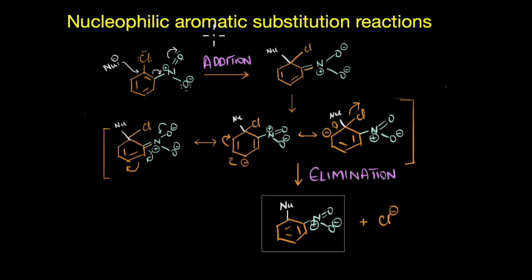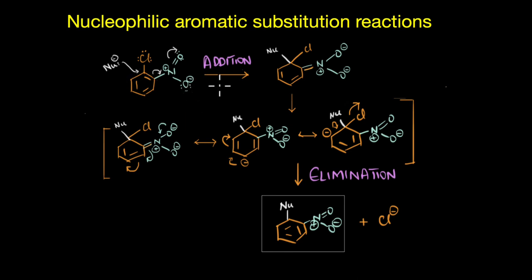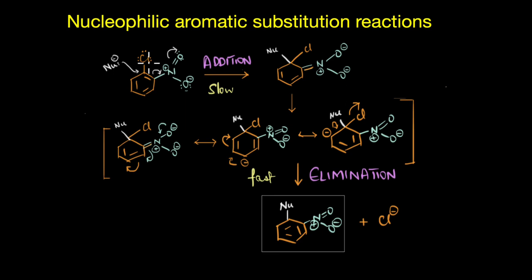This process is much favored because it also restores the aromaticity of the ring. This is why nucleophilic aromatic substitution reactions are also called addition-elimination reactions. The first step is the addition of the nucleophile, and the second step involves the elimination of the leaving group, which in our case is the halogen. The rate determining step in this reaction is the first step — the addition of the nucleophile — because it results in the loss of aromaticity. The aromatic ring does not want to lose its stability, so it takes a good deal of energy to get this step started, whereas elimination is much faster because aromaticity is restored.